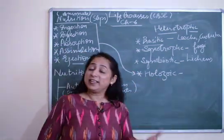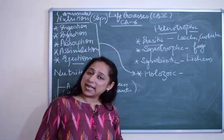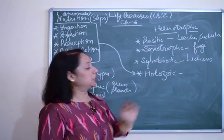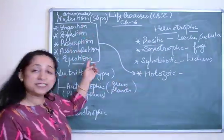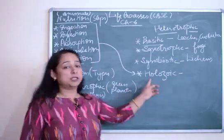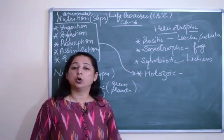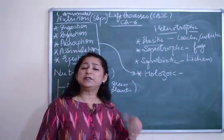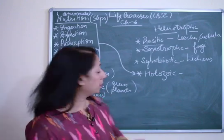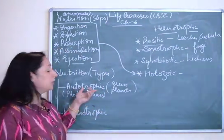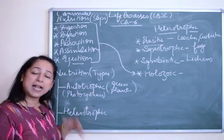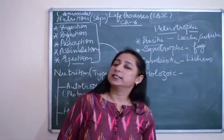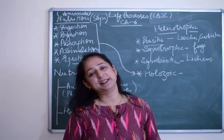Holozoic mode of nutrition is where any organism has a complete digestive system — it picks up food, puts it in the mouth, chews it, and then it goes down for digestion. All organisms that have this complete digestive system undergo holozoic mode of nutrition. In our next video we will talk about photosynthesis — autotrophic mode of nutrition and its experiments — and then the whole digestive system. Keep watching, liking, sharing, and subscribing. Thank you.